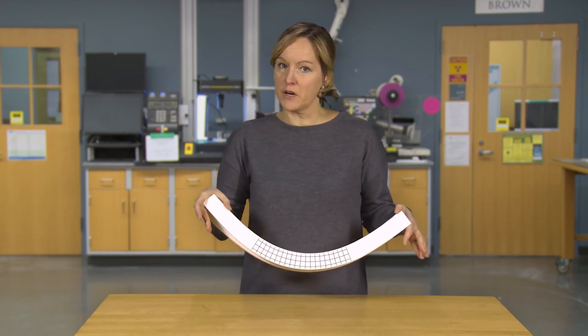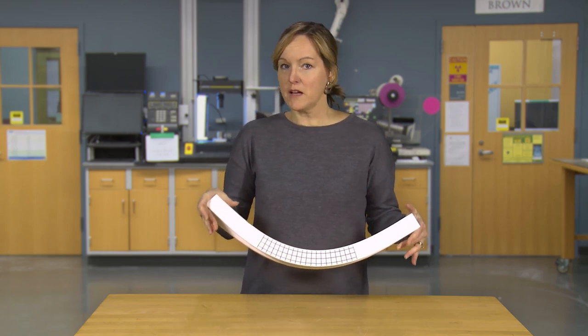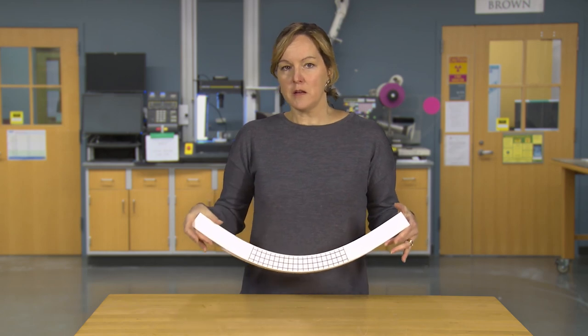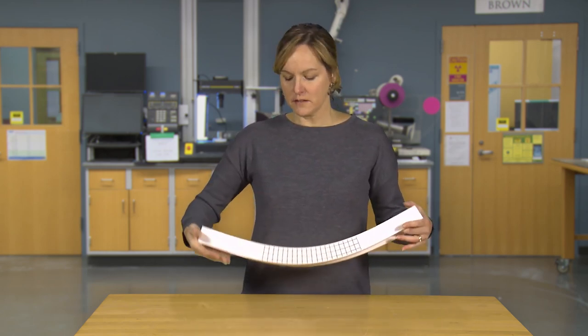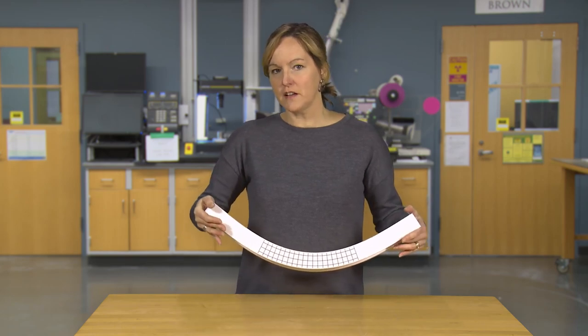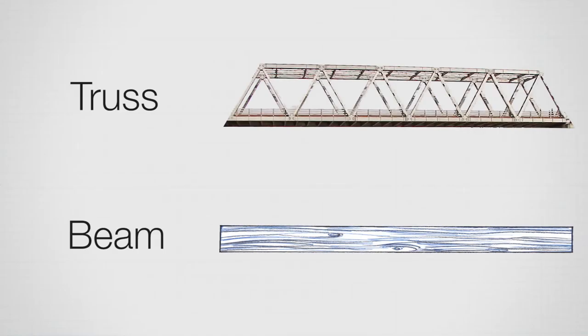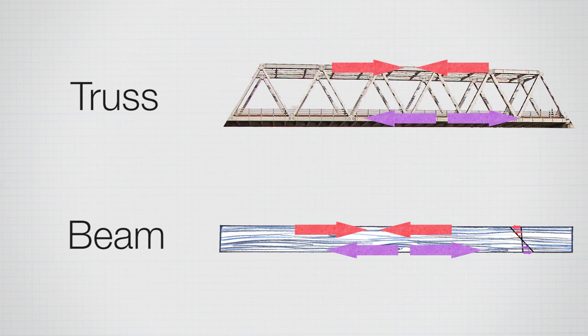So an engineer will typically look for where is the maximum tension and where is the maximum compression. And again, materials often behave differently in tension or compression. And beams are included in that. Wood is one example that has one allowable stress in tension and one in compression. It's not unlike a truss, except for now everything is happening in one single beam.